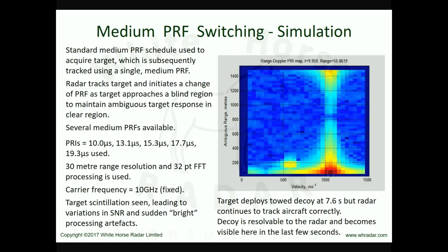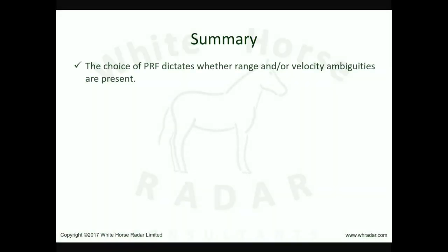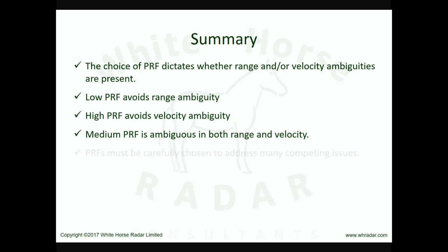In summary, we have seen how PRF selection falls into three different regimes defined by their ambiguity characteristics. Low PRF avoids range ambiguity, whereas high PRF avoids ambiguity in velocity. Medium PRF, on the other hand, incurs ambiguity in both range and velocity, but has good all-round performance even in testing clutter conditions because it cycles its operation over several medium PRFs. The strength of medium PRF lies in the careful selection of the combination of PRFs used in a schedule.